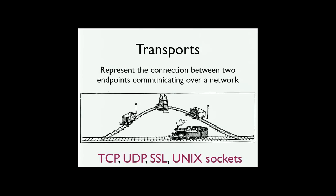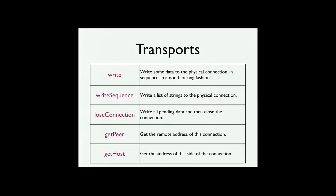In addition to this event loop — this reactor — we have the idea of a transport. A transport is very simple: it's the tiniest bit of reusable code that represents the connection between two endpoints communicating across the network. When we think about the OSI model, we think about transport-layer protocols like TCP for a reliable stream-oriented protocol, UDP, SSL for an encrypted channel, and Unix sockets. These are all transports in the Twisted sense. This is the really simple basic transport API for just sending bits out to the network.